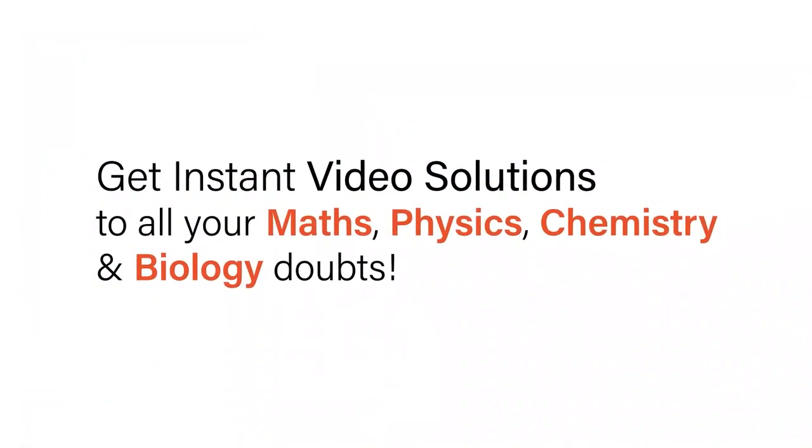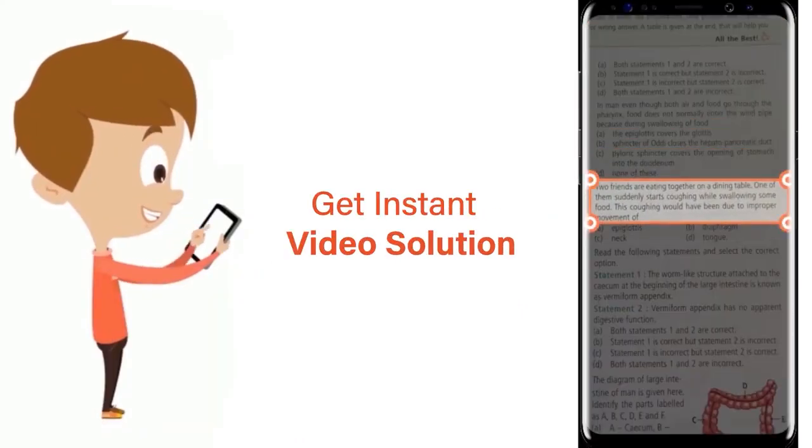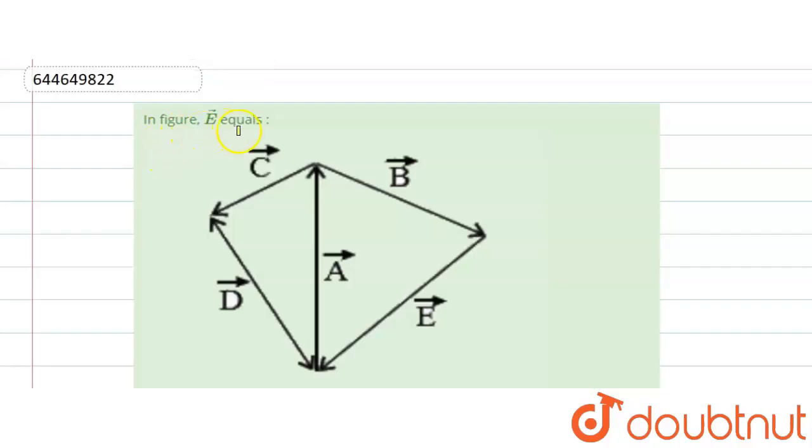With Doubtnet, get instant video solutions to all your maths, physics, chemistry and biology doubts. Just click the image of the question, crop the question, and get instant video solution. Download Doubtnet app today. Here the question is given e equals, the direction is given in this figure, and here we have to find e equals.